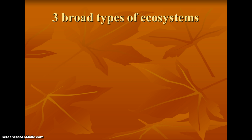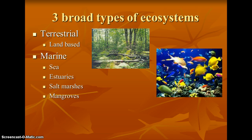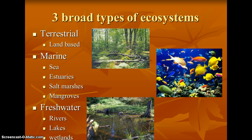The types of ecosystems that we are going to take these measurements: we have terrestrial, which are our land-based ecosystems; marine, which are our salt water — so that includes the ocean, estuaries, salt marshes, and mangroves; and then our freshwater, which are rivers, lakes, and freshwater wetlands.